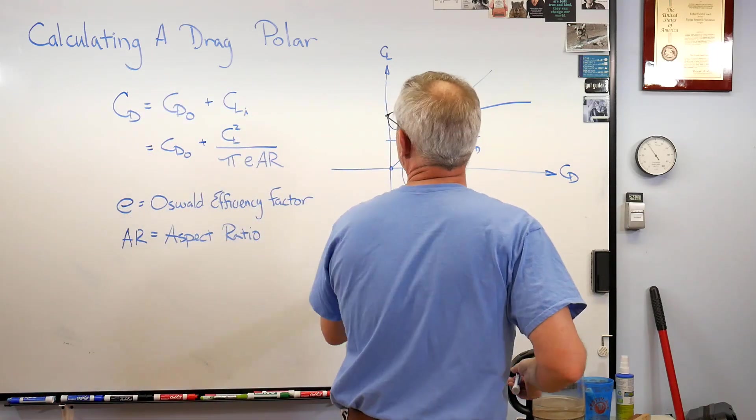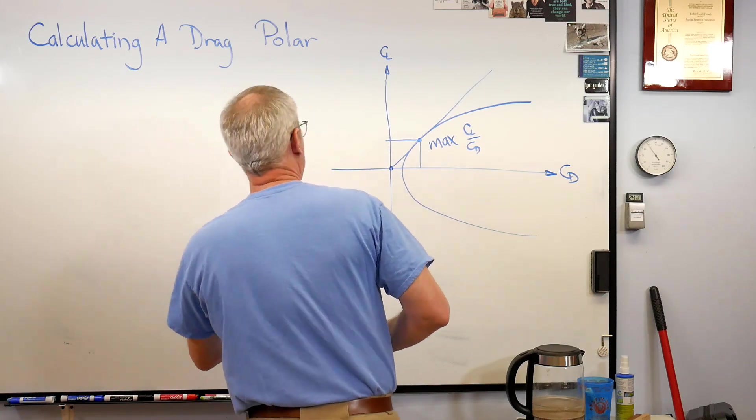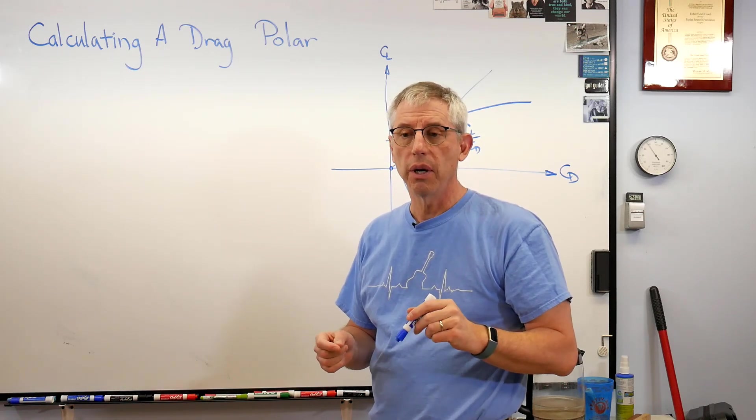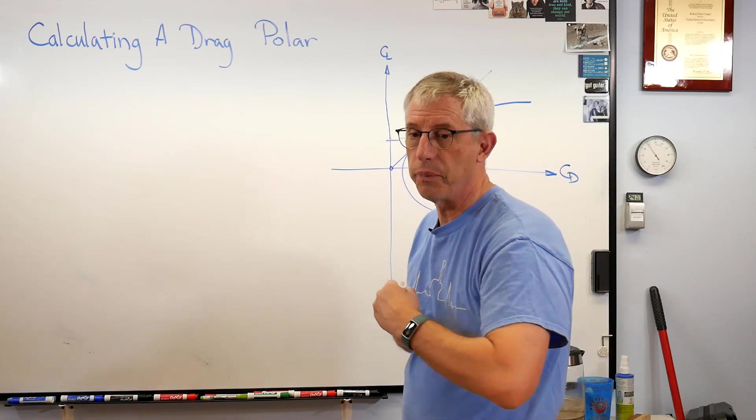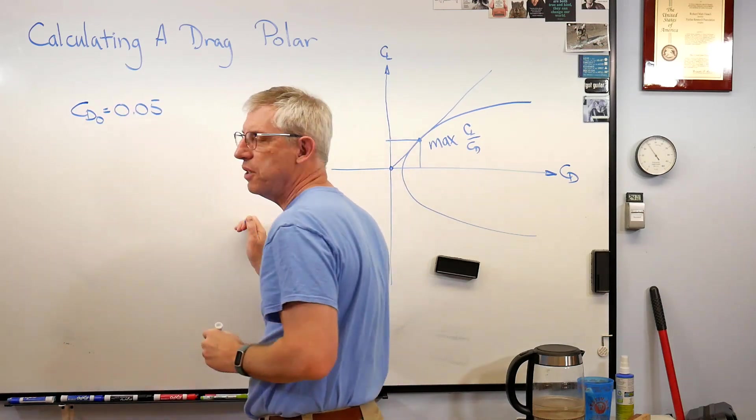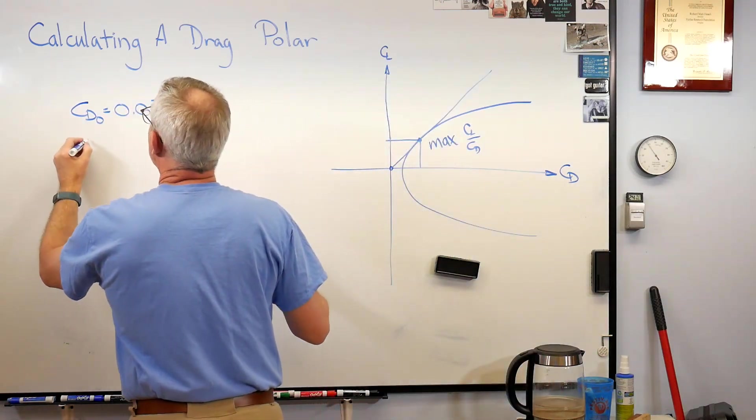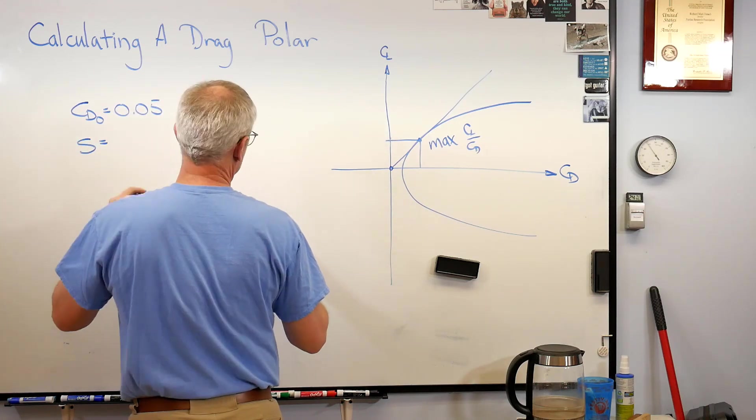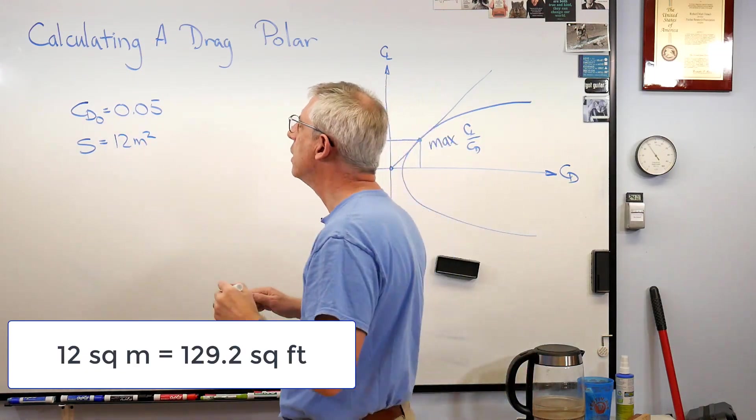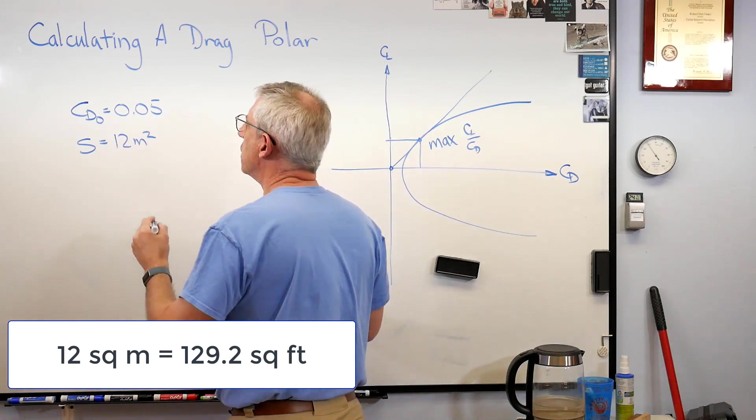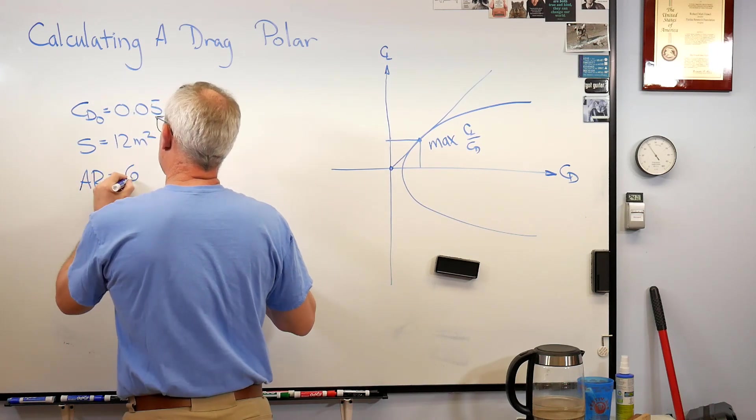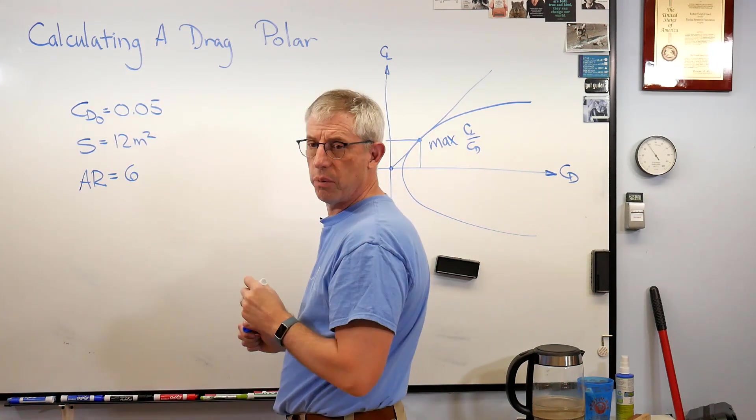Now let's run a couple of numbers. I'll calculate this and then show you on my computer a screenshot with a drag polar and a sample calculation. Let's say CD zero equals 0.05. That's fairly streamlined, actually not too bad. We need an aspect ratio. Let's say it's twelve meters squared, so that's like a hundred ten, hundred twenty square feet. This is a little airplane, a little piston-powered plane. We'll assume it's got an aspect ratio of six.